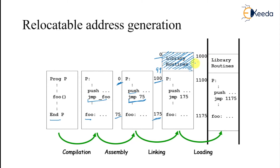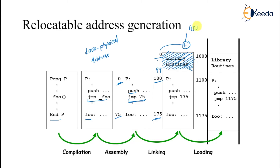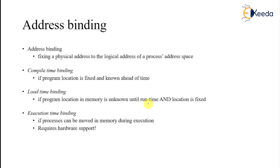Finally, I come to know that my program will be loaded from physical memory location 1000. So what was 100 becomes 1000 — meaning we added the value 1000 to every address. 100 becomes 1100 and 175 becomes 1175. So that is address binding. Address binding is fixing a physical address of a logical address space of a process.